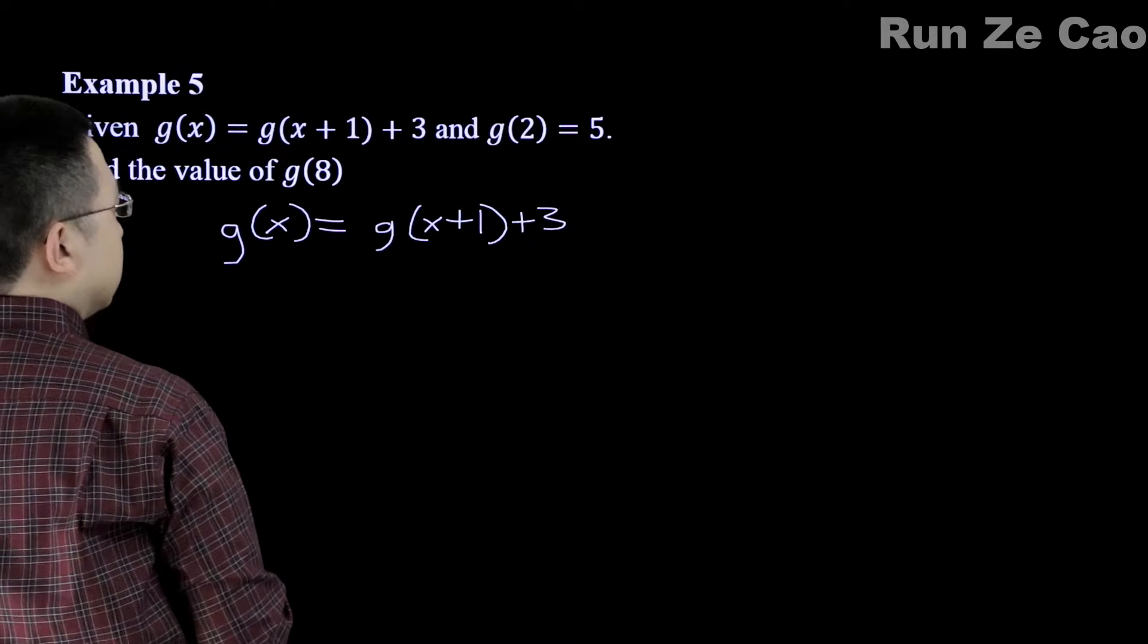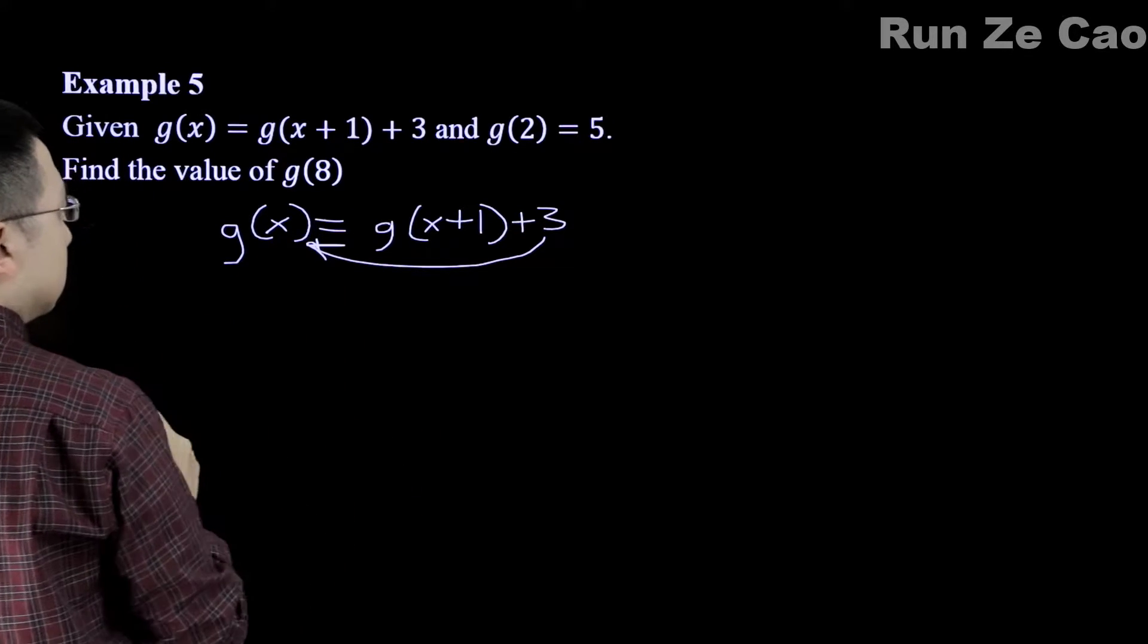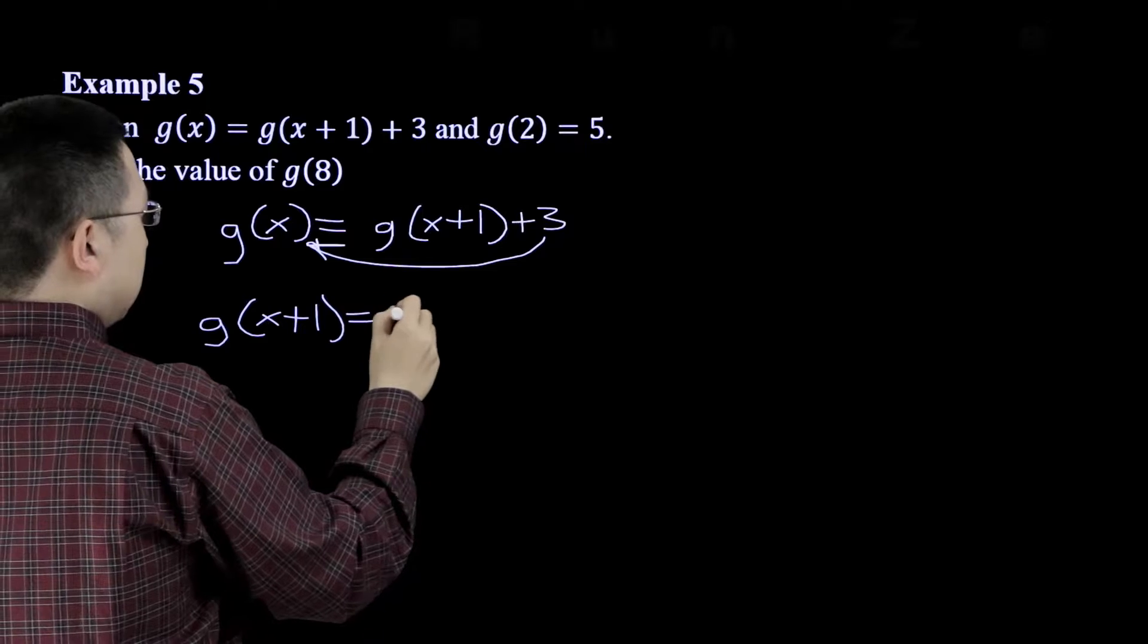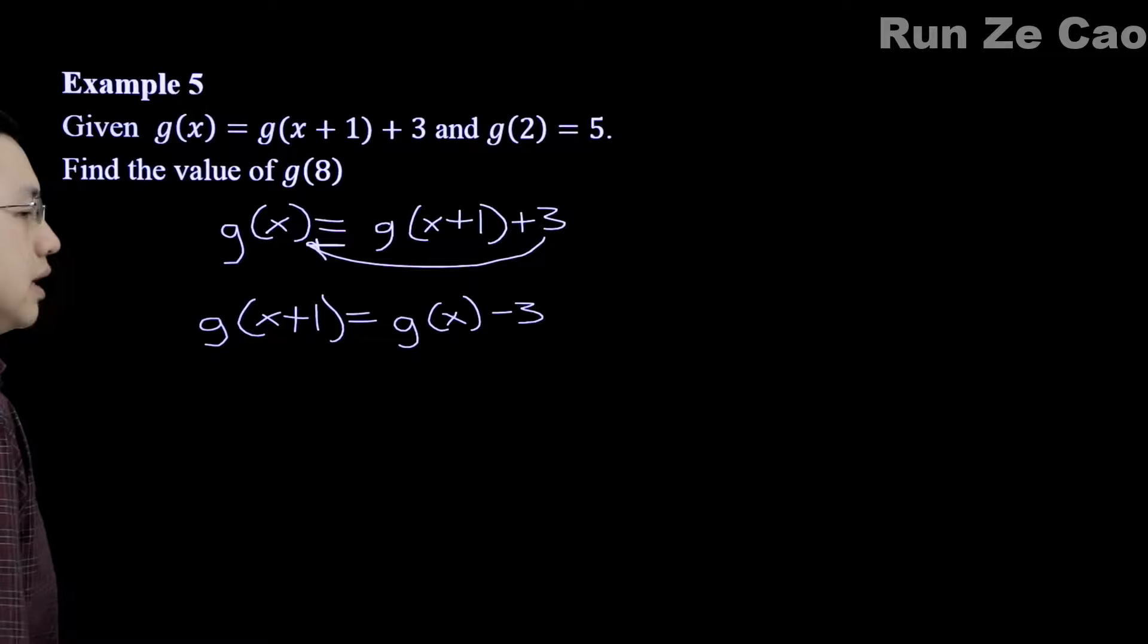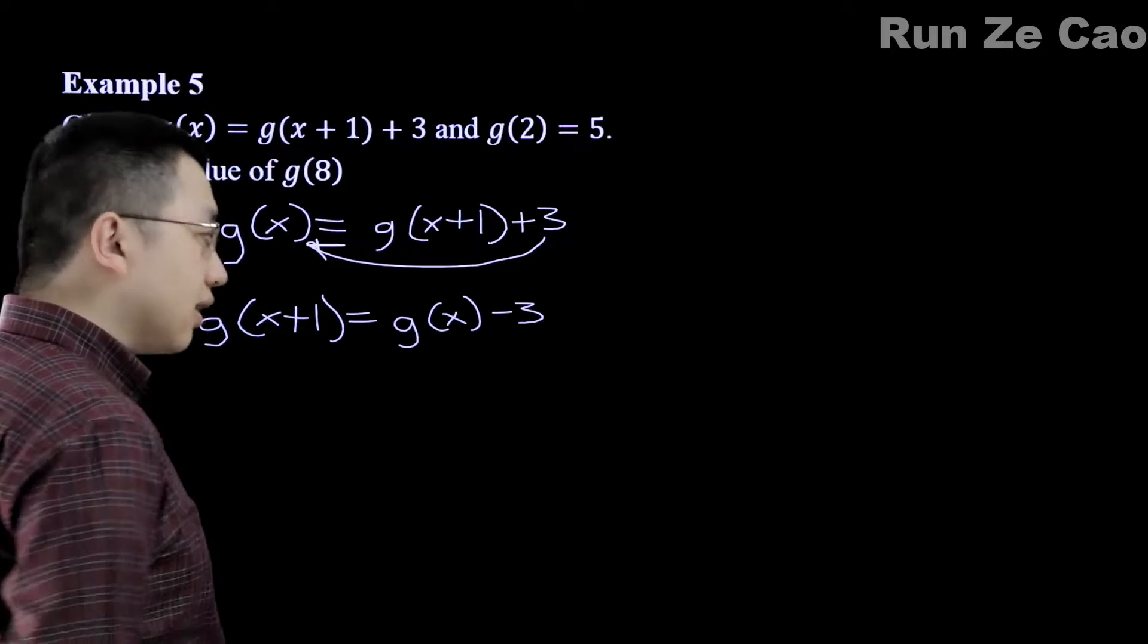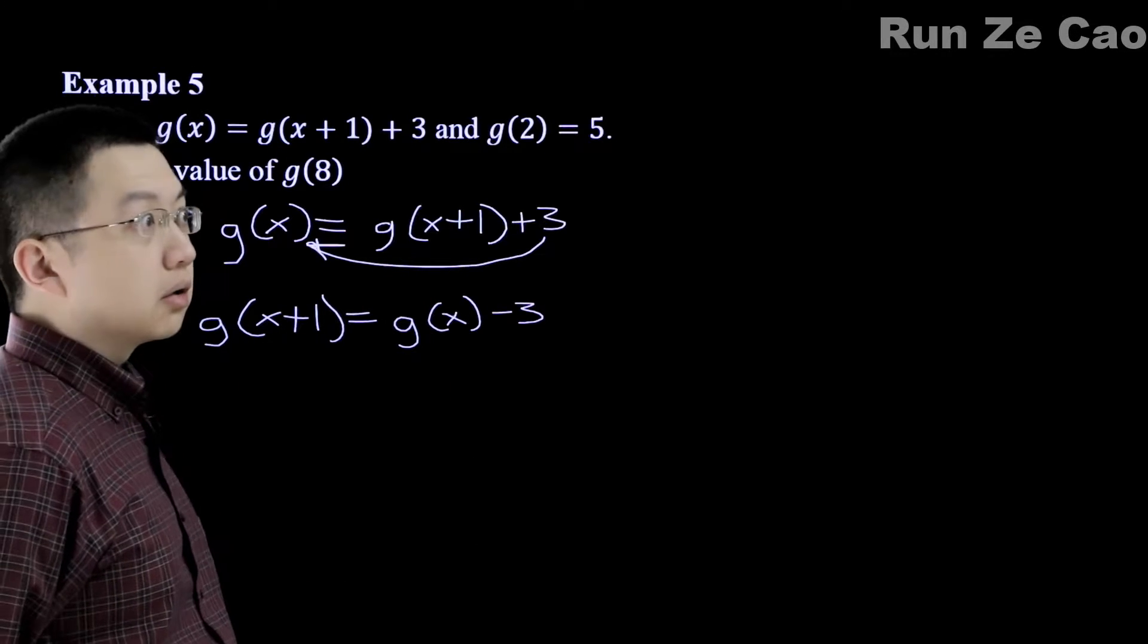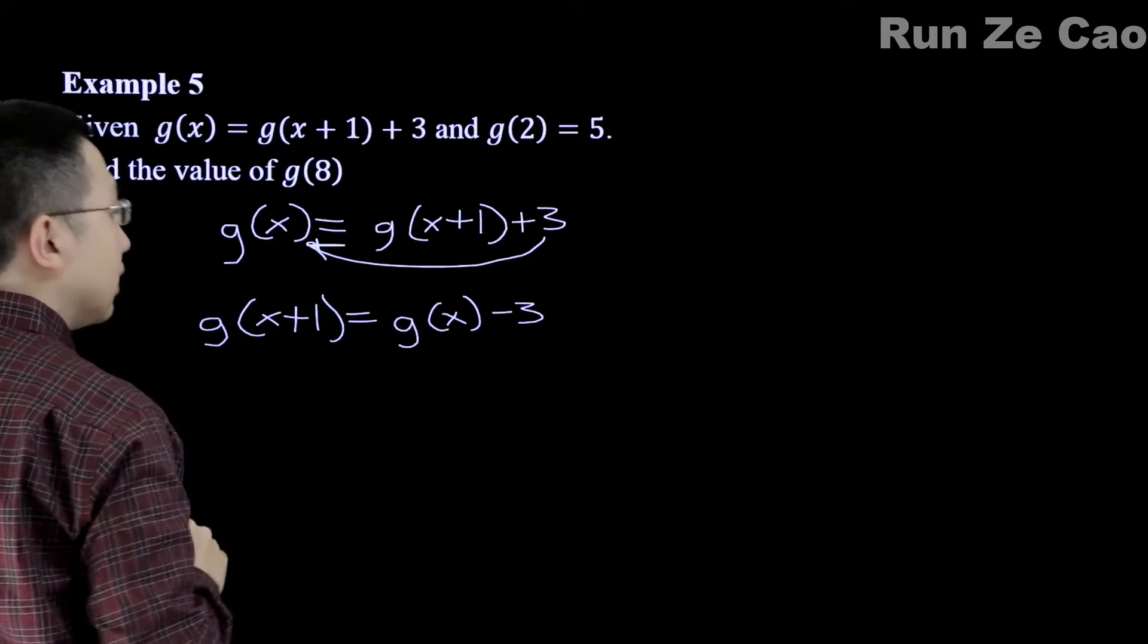So suppose we rearrange by moving this over. Now, that would give us g(x + 1) equals g(x) minus 3. So for every time you increase x by 1, the value of g(x) will decrease by 3.